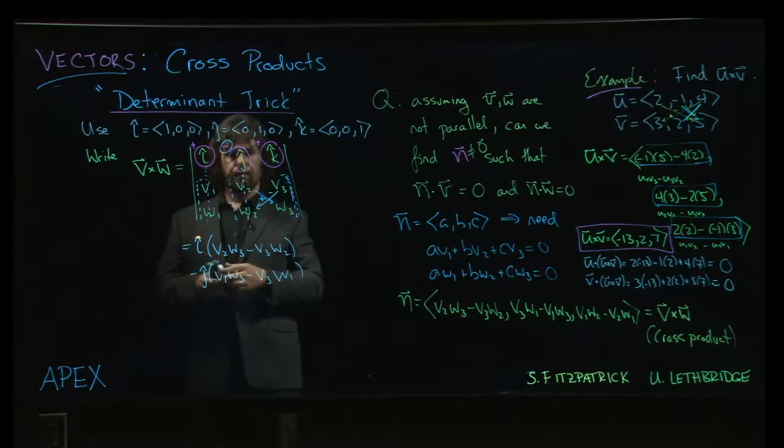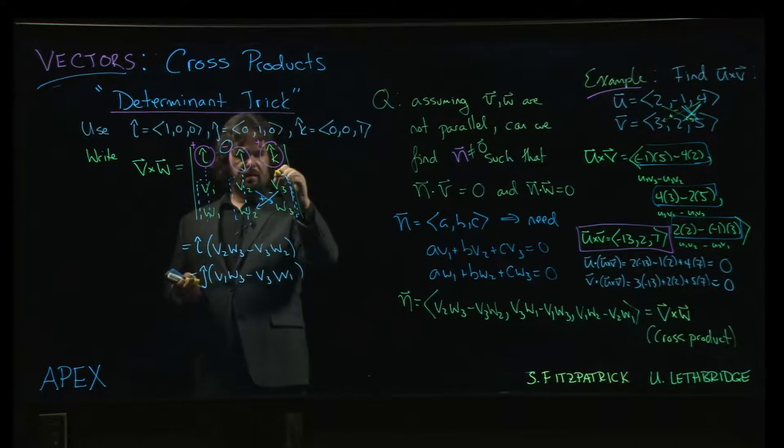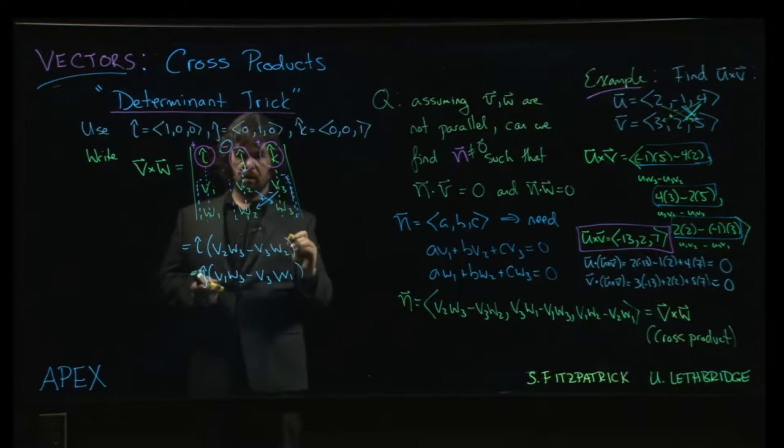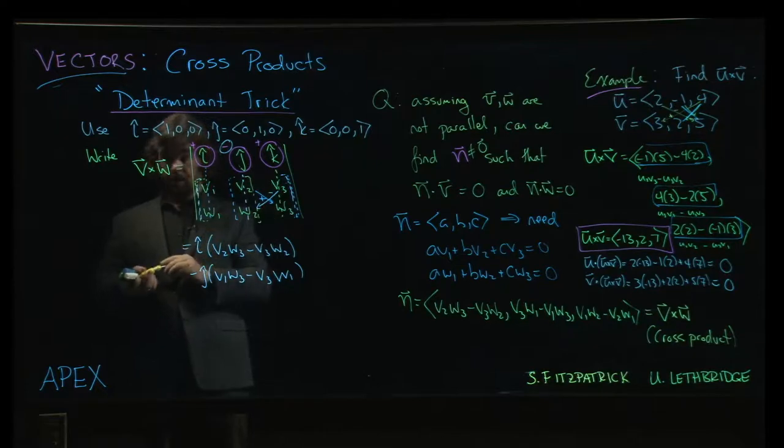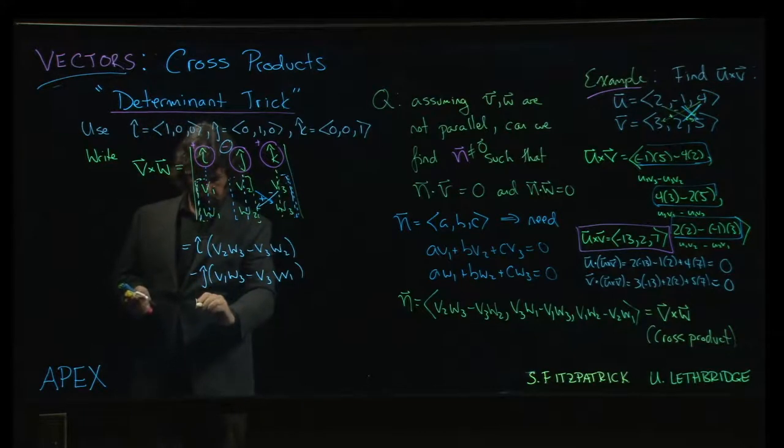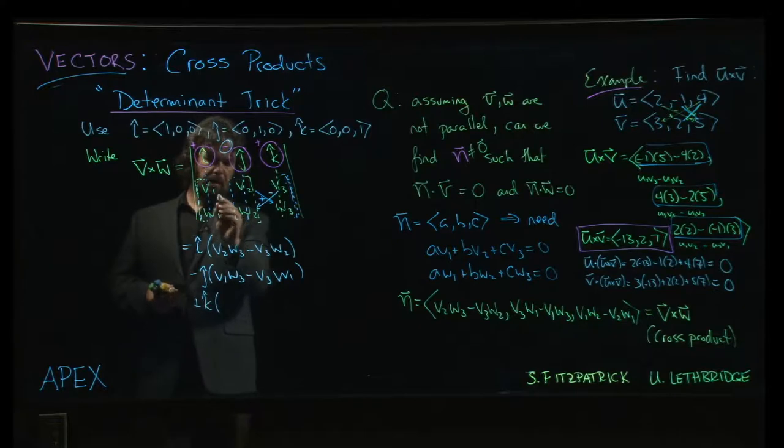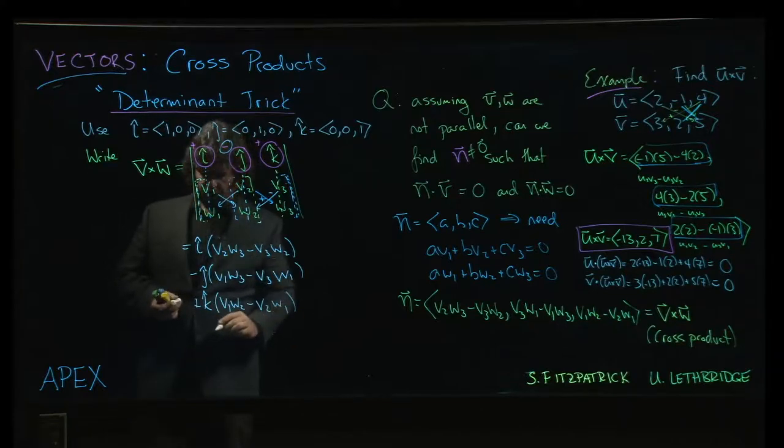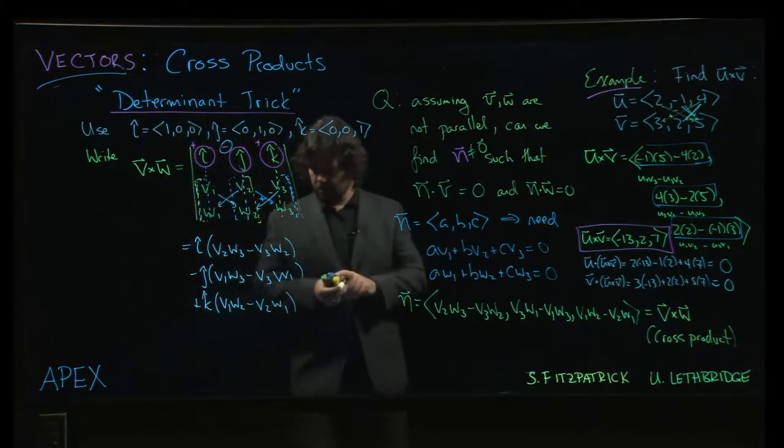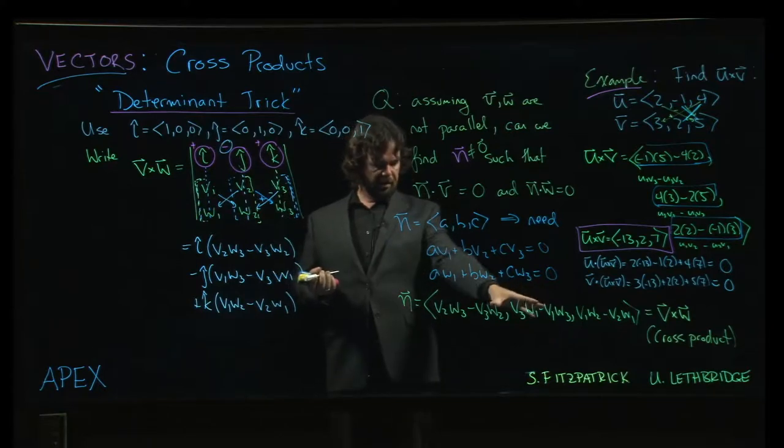Finally we get to k, the last one, and we do the same thing. We delete the numbers below the k and keep the two-by-two grid that's left once you get rid of those two numbers. We write down plus k, and then we do the same cross multiply and subtract: v1·w2 minus v2·w1.